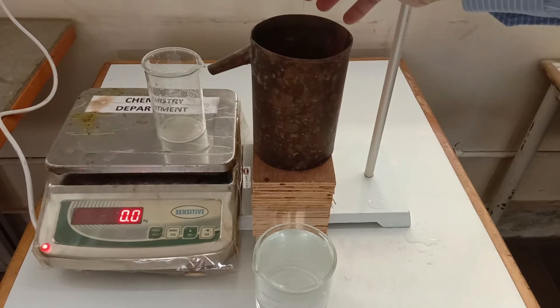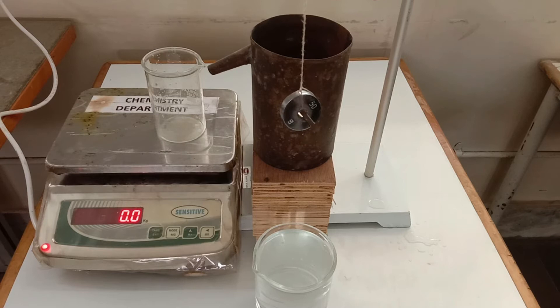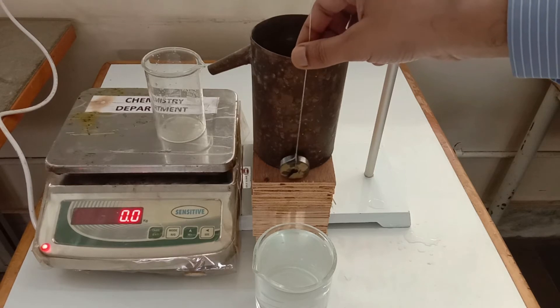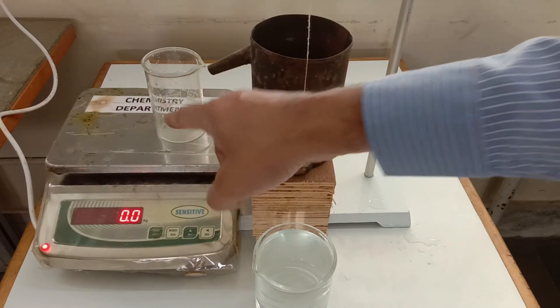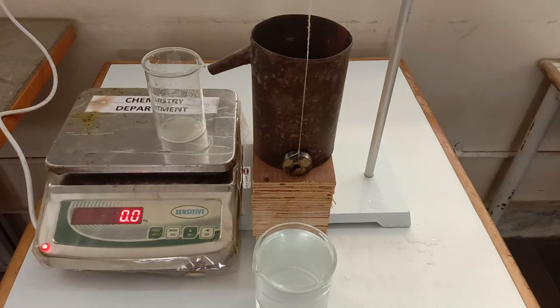Now I am going to completely fill this Eureka can with water and immerse this 50-gram standard mass which is connected with the thread. Extra water will be displaced out and will be collected in the beaker, and its weight will be the upthrust.